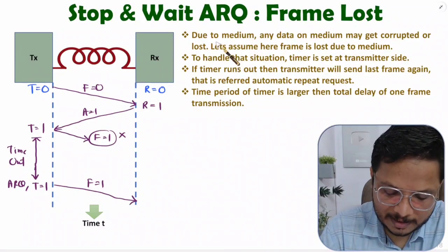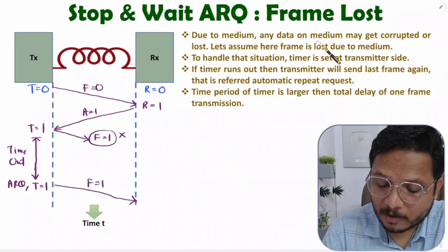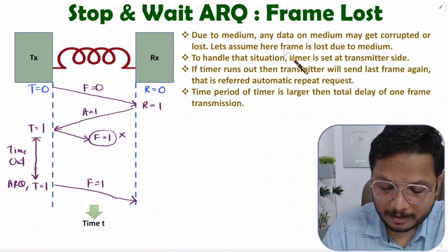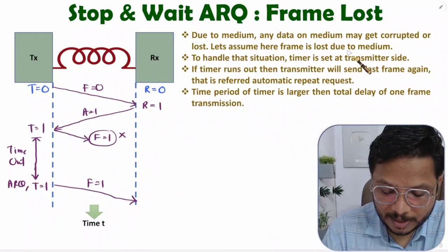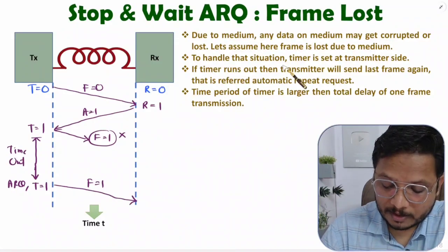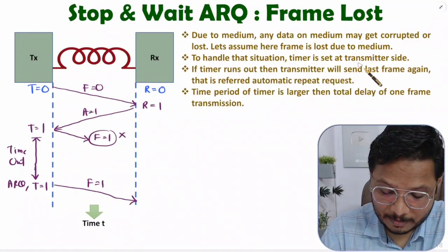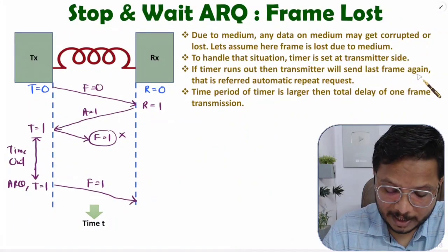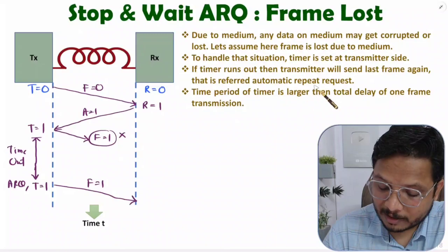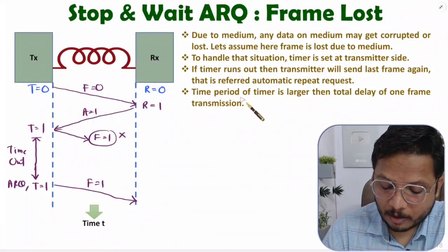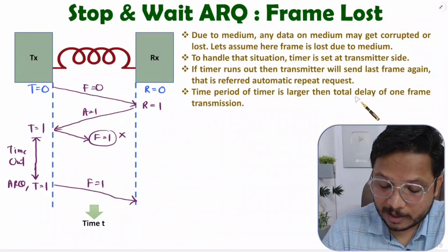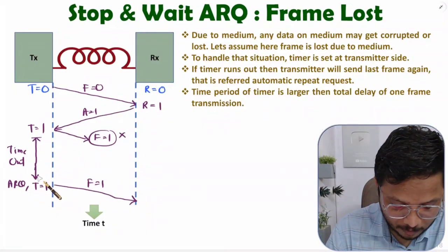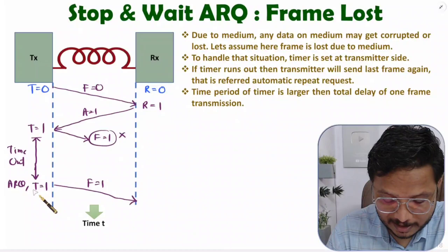Due to the medium, any data may get corrupted or lost. To handle this situation, a timer is set at the transmitter side. If the timer runs out, the transmitter sends that last frame again — this is referred to as Automatic Repeat Request. The time period of the timer is larger than the total delay of one frame transmission.